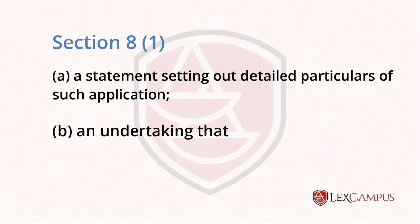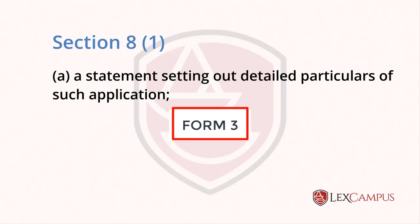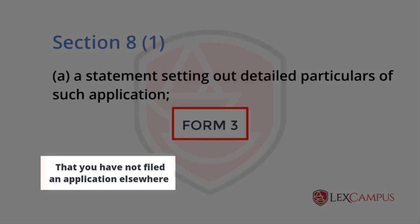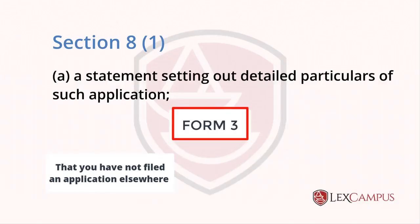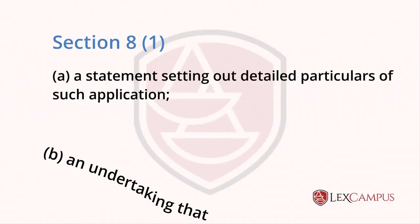So there are two things to remember in Section 8. There is a statement that has to be made, and if you look at Form 3, the statement is again split into two. One, you can make a statement saying that you have not filed an application elsewhere, or if you had filed an application in another country, you will have to give details of that application. So the statement itself, if you look at Form 3, has two parts.